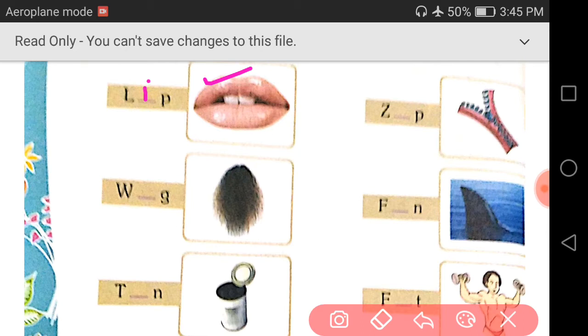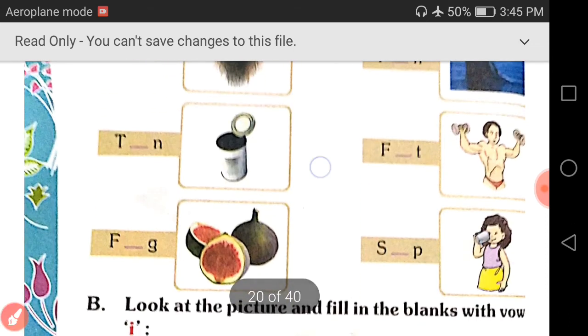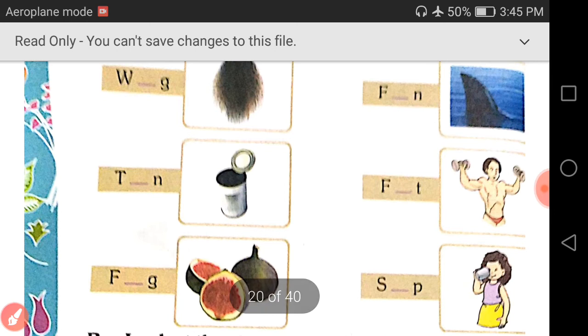Next, wig. What is it? Wig. W-I-G, wig. Write down I. W-I-G, wig. Next, tin. T-I-N, tin. Write down I. T-I-N, tin.